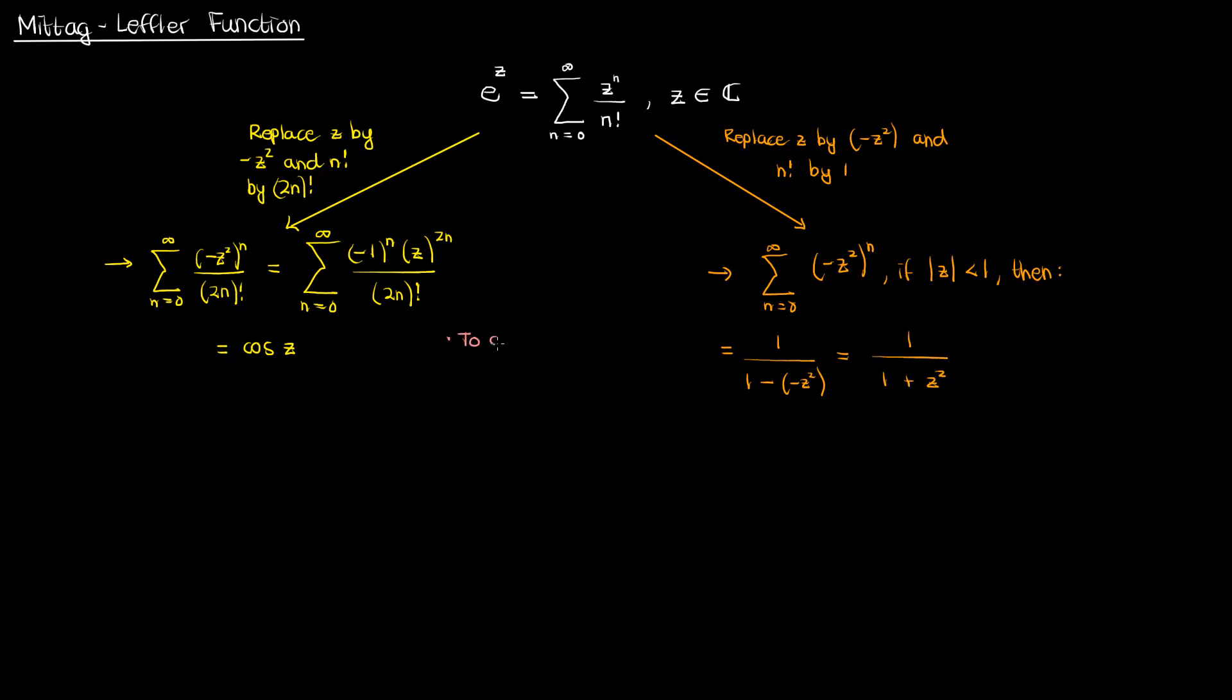So notice what happened here. We went from an infinite series describing the exponential to an infinite series describing the cosine and an infinite series describing this rational function, and all we did to get there was make small modifications to the exponential series, replacing z by negative z squared and the n factorial by different variations of it.